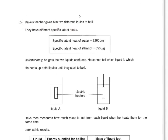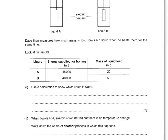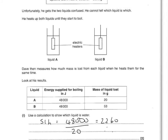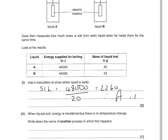Dave's teacher gives him two different liquids to boil with different specific latent heats. He gets the two liquids confused and heats both until they start to boil, then measures the mass lost from each for the same time. Use a calculation to show which liquid is water. Energy equals specific latent heat times mass, so specific latent heat equals energy divided by mass. For liquid A: 48,000 divided by 20 equals 2,260 — and looking back at our latent heat values, that is water. Therefore A is water. The other one would give you ethanol.